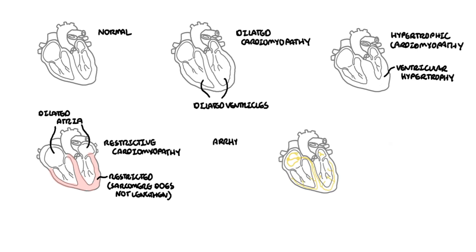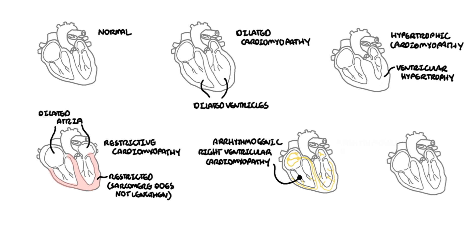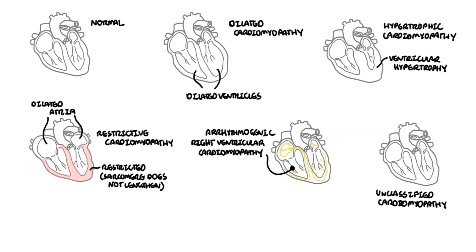The fourth type is arrhythmogenic right ventricular cardiomyopathy — a problem usually of the right ventricle caused by mutation in the desmosome complexes, the structures that hold the cardiac muscle cells together. Unclassified cardiomyopathies include peripartum cardiomyopathy, tachyarrhythmia-induced cardiomyopathy, and Takotsubo's cardiomyopathy, also known as broken heart syndrome.